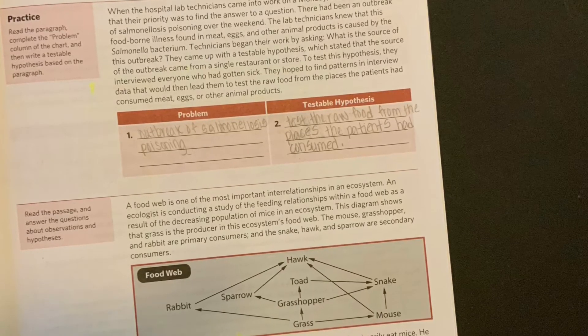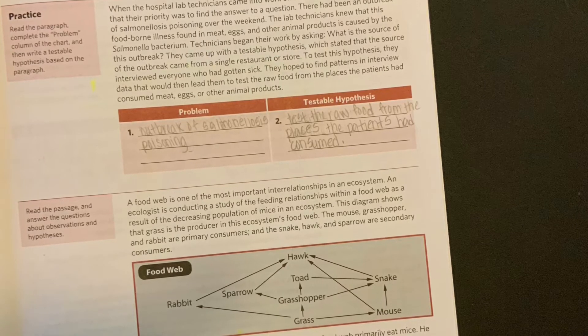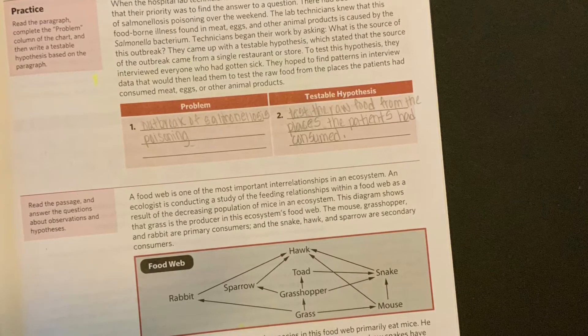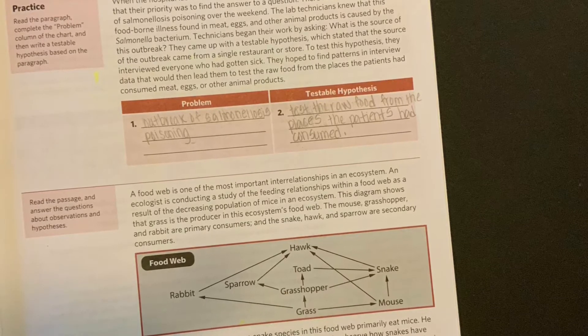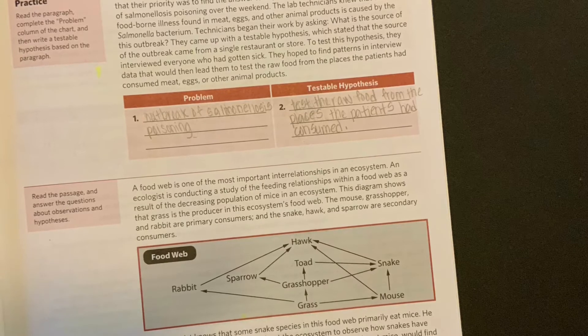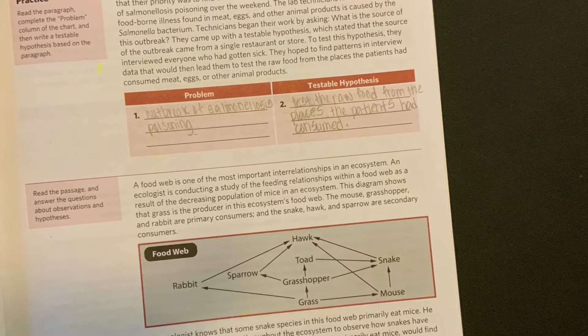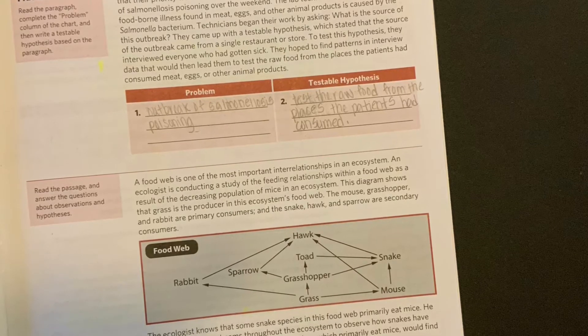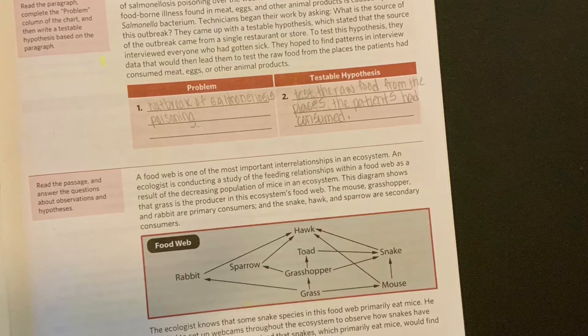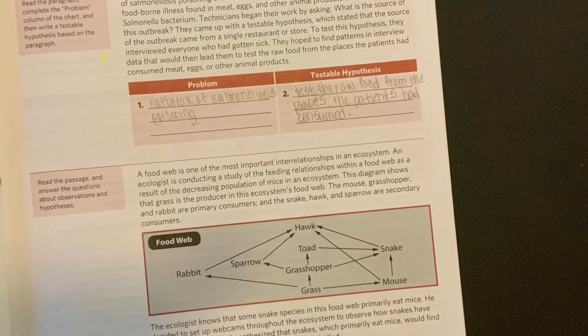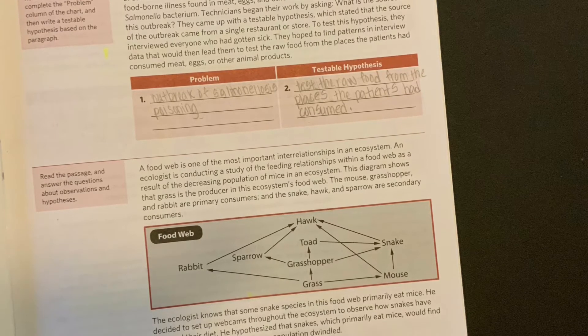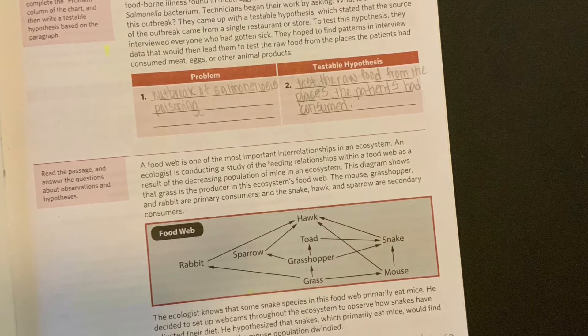When the hospital lab technicians came into work on a Monday, they were told that their priority was to find the answer to a question. There had been an outbreak of salmonellosis poisoning over the weekend. The lab technicians knew that this foodborne illness found in meats, eggs, and other animal products is caused by the salmonella bacterium. Technicians began their work by asking what is the source of this outbreak. They came up with a testable hypothesis which stated that the source of the outbreak came from a single restaurant or store. To test this hypothesis, they interviewed everyone who had gotten sick. They hoped to find patterns in interview data that would then lead them to test the raw food from the places the patients had consumed meat, eggs, or other animals.